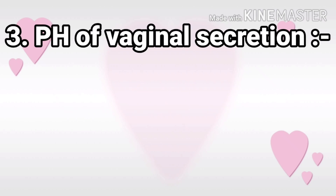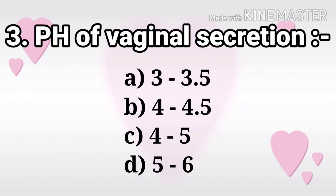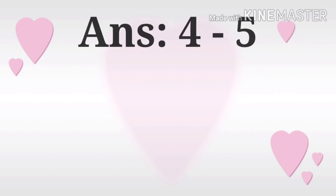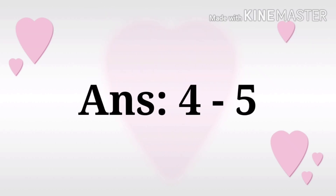Next question: pH of vaginal secretion. The options are 3 to 3.5, 4 to 4.5, 4 to 5, 5 to 6. The answer is 4 to 5.